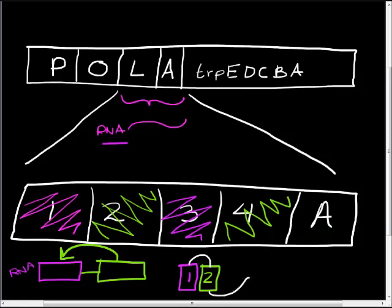As region 3 is being made, it will not pair with region 2. Region 2 is already involved in pairing with region 1. But as region 4 is made, region 4 is complementary with region 3, and region 4 will bond with region 3. This is going to leave hanging off the end, this attenuator region, this string of U's. And you can see what this structure looks like right here.